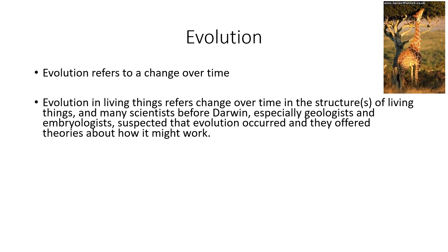In the context of living things, evolution refers to change over time of the structures of living things. Many scientists even before Darwin — geologists, embryologists, archaeologists — suspected that evolution occurred. It's been known all the way back to Plato, and for thousands of years we've had writings about how living things changed over time. Some earlier works talked about how speciation might occur, while others referred to changes within a species.